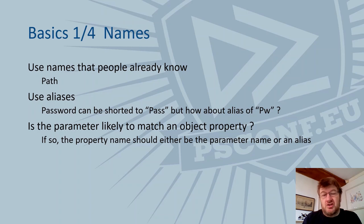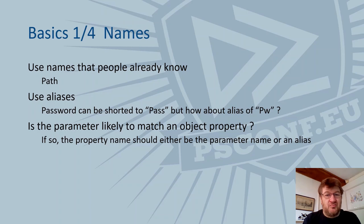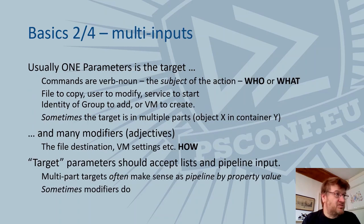Some basics on names: try not to reinvent the wheel. Use names people already know, like 'Path' or 'Recurse' instead of 'Subdirectories.' Aliases help to shorten names — you might have multiple names beginning with 'PA', so you can't use it for password, but you could use 'PW' as an alias for password and 'PT' for pass-through. If there's any chance the parameter name matches an object property, keep the names the same — that particularly helps when you use value-from-pipeline-by-property-name.